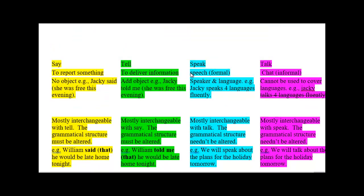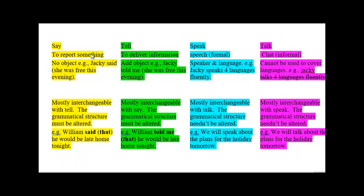Let's do a quick comparison between them. We use 'say' for reporting something said — for example, 'Jackie said she was free this evening.' There is no object here. We use 'tell' to deliver information, so we say 'Jackie told me she was free this evening' — we use an object. You can use say or tell in the same sentence, but with tell you must add an object. So 'William said that he would be late home' becomes 'William told me that he would be late home' — we've added 'me' as the object.